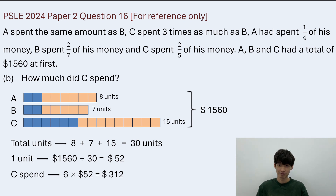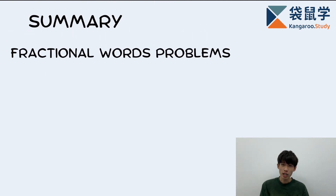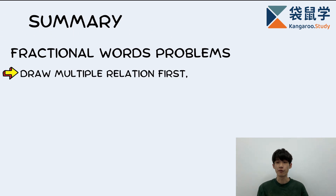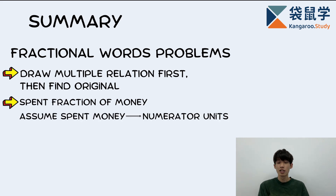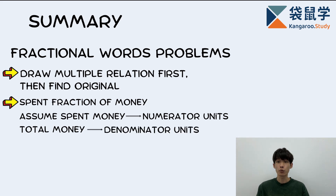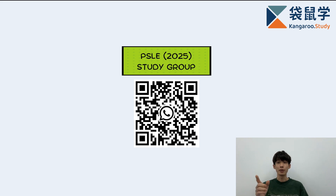That's how we solve the question. To summarize: for fraction word problems, when drawing the model, try to draw with the multiple relationship first and then find the original. If we're facing a 'spent fraction of money' situation, we can see the numerator as the money spent and the denominator as the total amount of money. If you want to learn more about PSLE, you can join our study group by scanning the QR code. Don't forget to subscribe to our YouTube channel and submit our daily check-in questions.